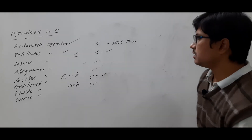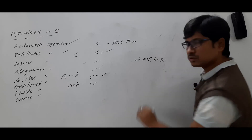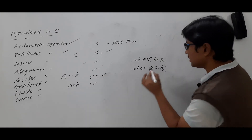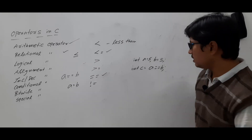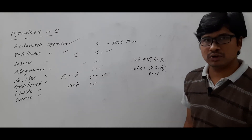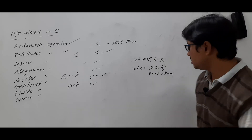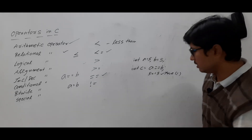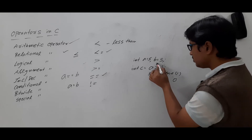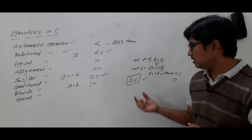Let me tell you one more thing. Suppose you have written int a equal to 5, b equal to 5, and you write int c equal to a == b. Then what c value will you get? It will check whether 5 is equal to 5. Since 5 is equal to 5, it is true. When you are comparing you will get either true or false — if it is true, you will get the value 1, if it is false, you will get the value 0.